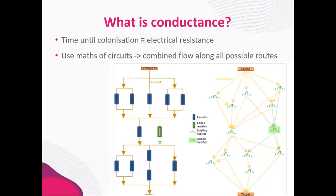What is conductance, exactly? The reason it works and is quicker than running population simulations is that it makes an analogy between colonisation jumps and what happens in an electrical circuit where nodes are joined together by resistors. Condatus uses what's known about electrical resistance and that mathematical theory to calculate the combined flow along all possible routes in the network from source to target. There's more about this analogy on our website.